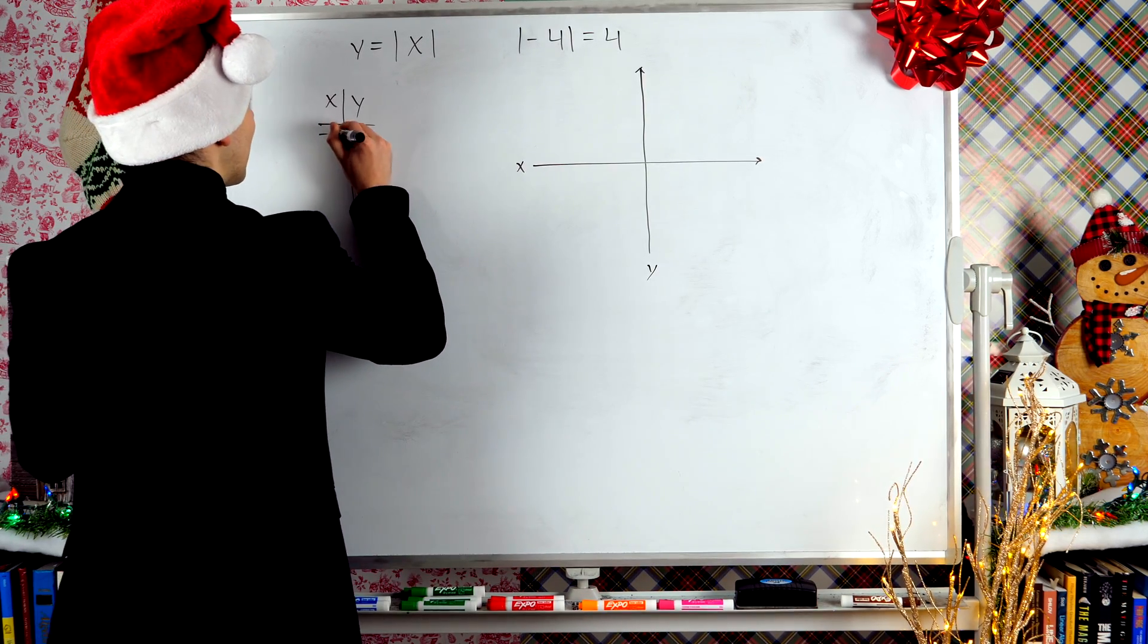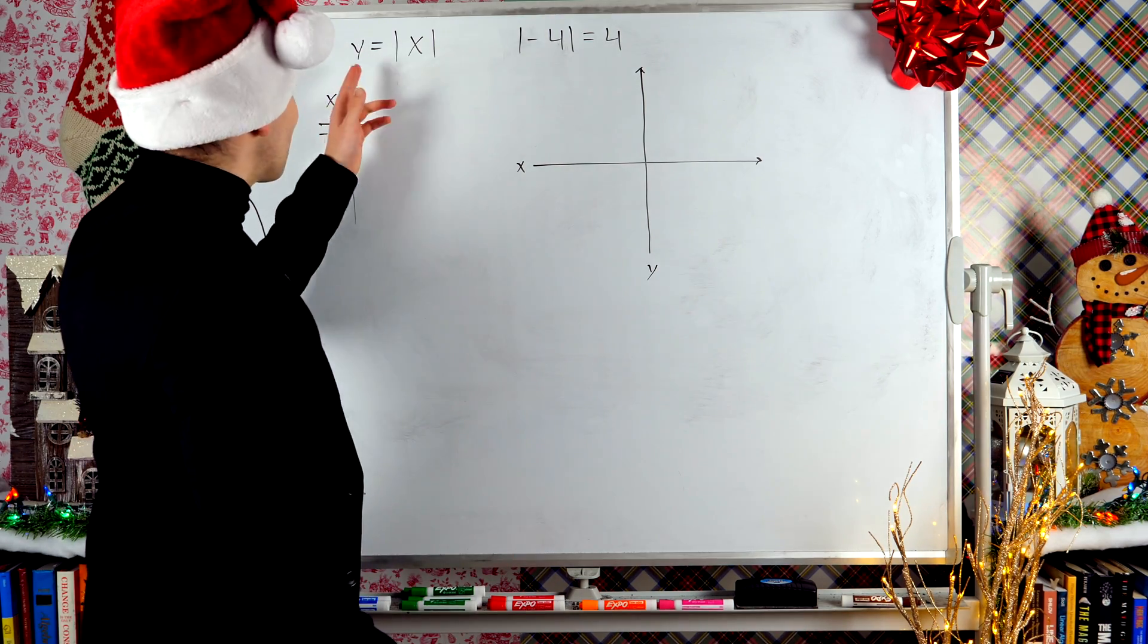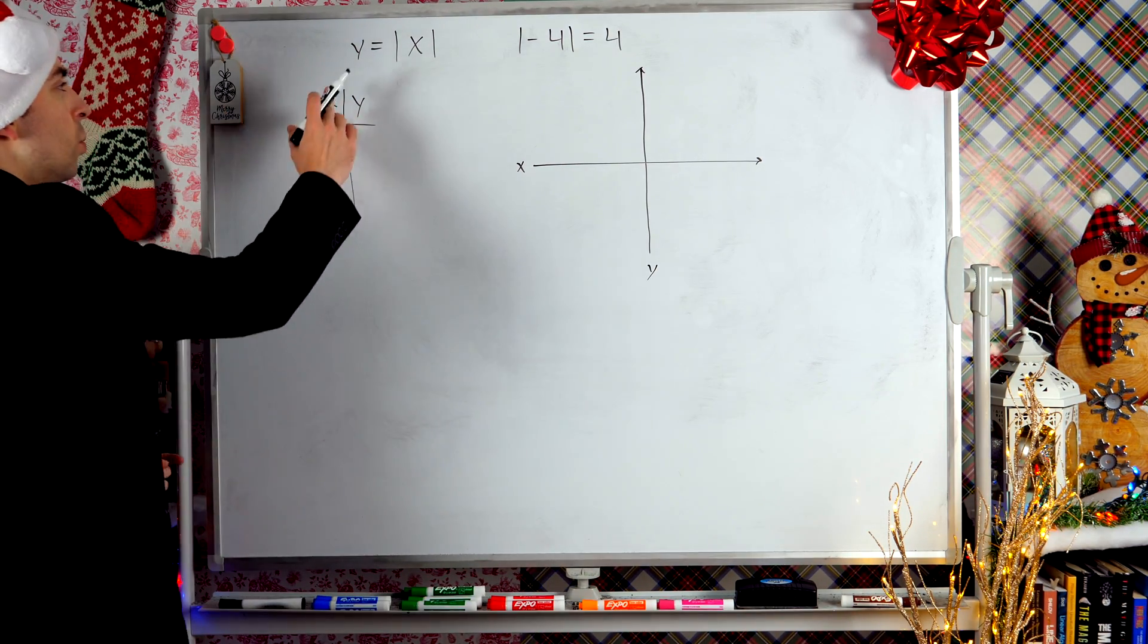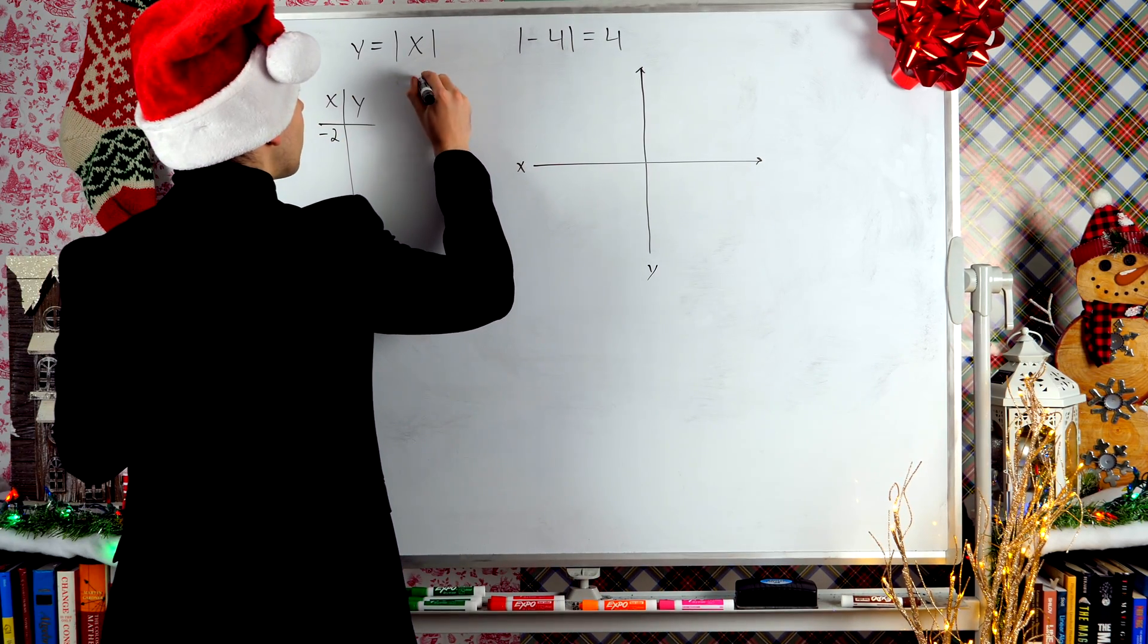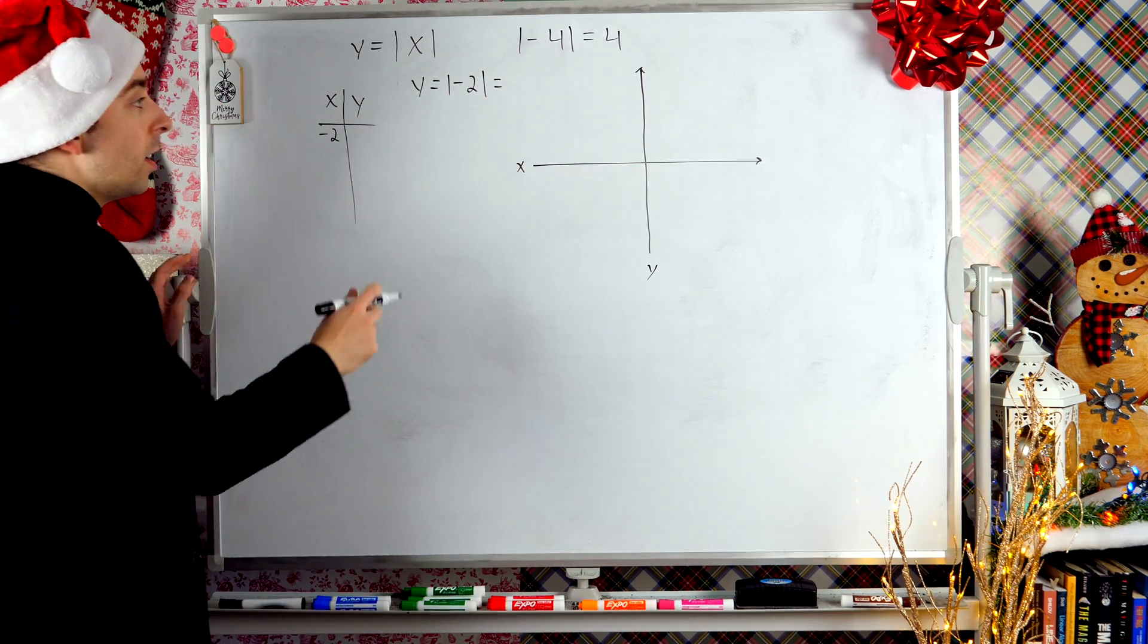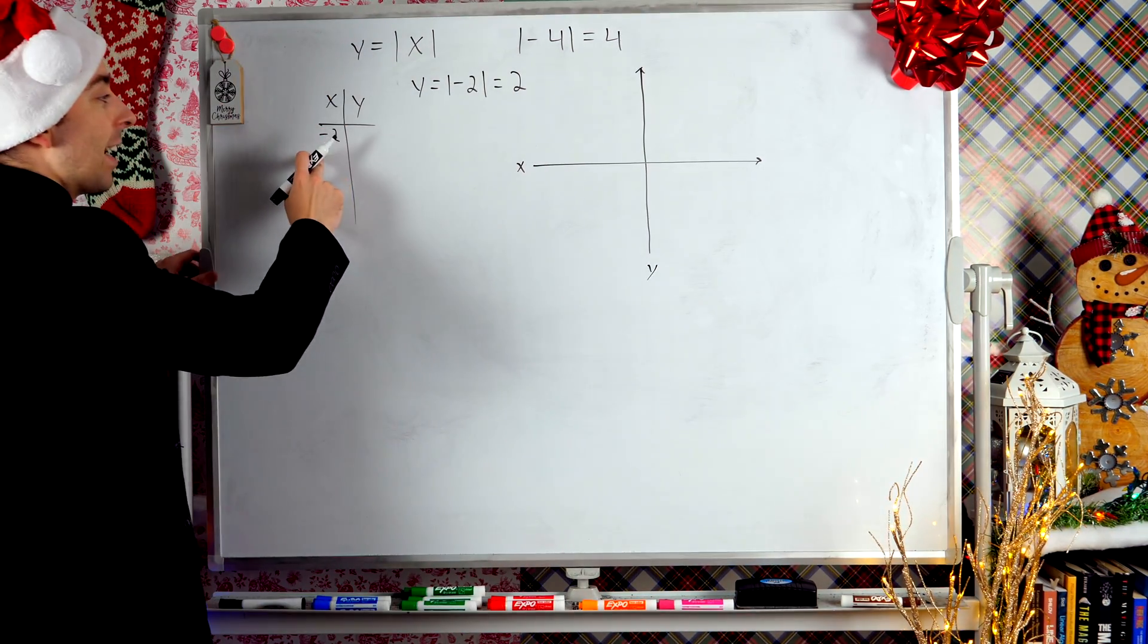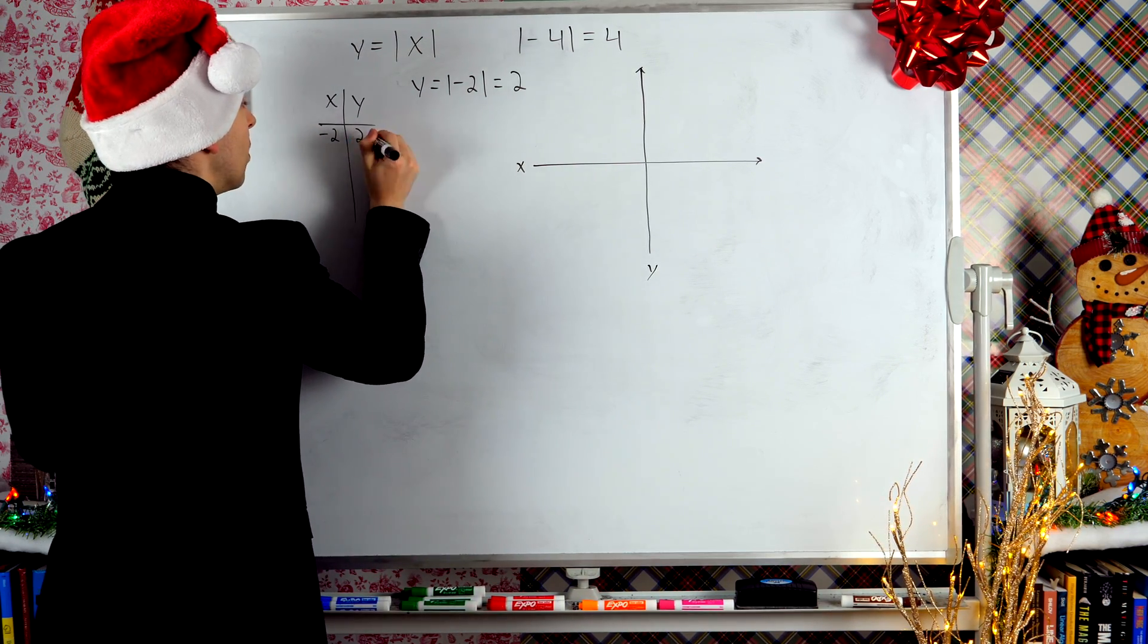Let me try plugging in negative two for x. Once you pick an x value, you don't get to pick a y value. The y is determined by the x. So if x is negative two, then what's y? Well, y is the absolute value of x, so y would be the absolute value of negative two. Again, absolute value just gets rid of negatives, so that is two. So in my chart, next to the negative two in the x column, I'll put positive two in the y column.